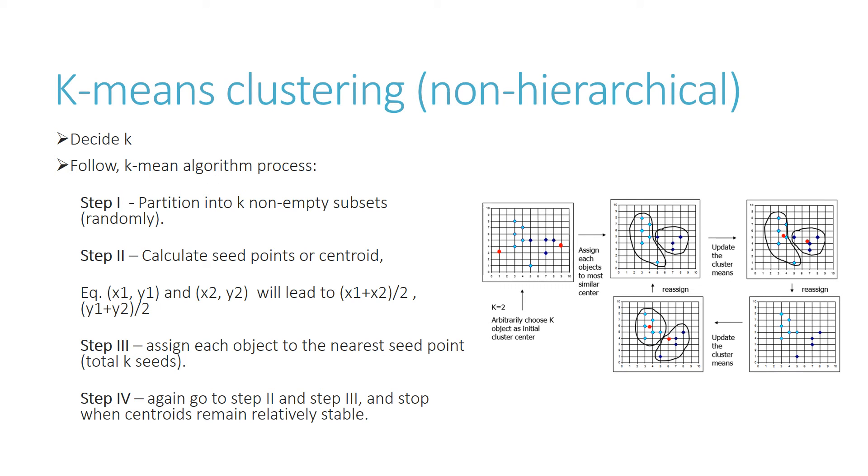K-mean clustering, which is a non-hierarchical approach, is the most popular clustering technique where we decide K, the number of clusters that are needed finally. Afterwards, k-mean algorithm process is followed. Step 1: partition of the whole data set into K non-empty subsets is done randomly. Then we calculate the seed points, which are also called centroids or mean points for each of the clusters. Assign each object or observation to the nearest seed point, and step 4: again go to step 2 and step 3, and stop when arrangement doesn't change or centroids remain relatively stable.